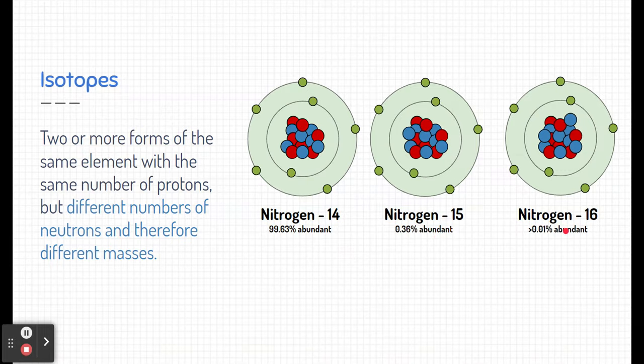Nitrogen-16, we see very little of nitrogen-16. Again, it does exist, but just not so much. So going back to our definition, these are three forms of the same element. Now what's true if they're all the same element? They all have the same number of protons.